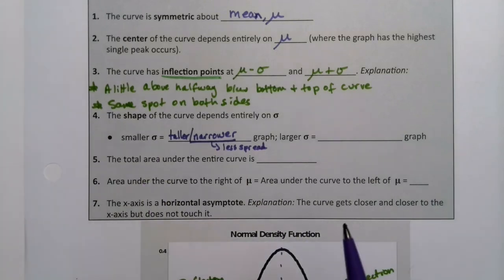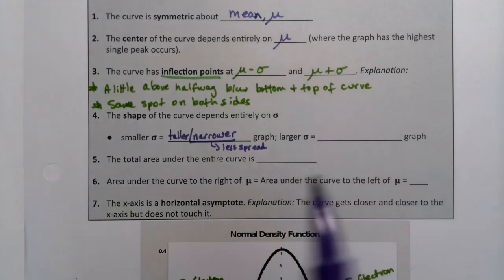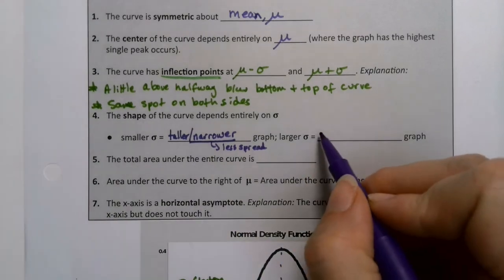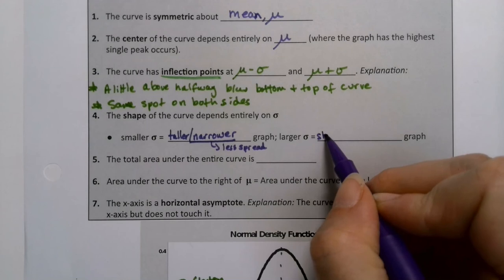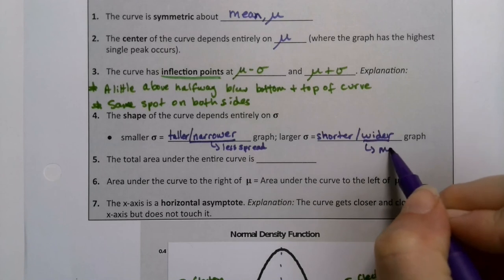Standard deviation is a measurement of spread. So if you have a smaller standard deviation, it's more packed in. It's less spread out. If you have a larger standard deviation, then that meant that the graph was shorter and wider. And that wider piece is important because that means it has more spread.